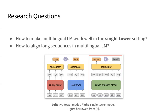In this paper, we address two important research questions. First, how to make a multilingual language model work well in the single tower setting? The single tower model, depicted in the right part of the figure, means that we encode query and document in the same path. This is the more common approach for re-ranking, whereas the two tower model on the left, recently also referred to as dense retrieval, is more focused on efficiency and used in first stage retrieval. What is hard about using single tower in CLIR is that the input of the model is always a sequence consisting of two languages.